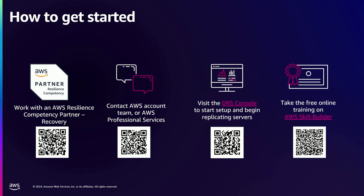How to get started with DRS: we have a Resilience Competency Partner Program in AWS, with a handful of partners qualified to build disaster recovery projects. Check the QR link. You can also engage with your AWS account manager or AWS Professional Services. If you're more of a do-it-yourself type, just open the AWS console, go to DRS, and a wizard will guide you on how to set up DRS. And if you want training first, there's free training on AWS Skill Builder to help you build up your skills and get started with your disaster recovery planning.